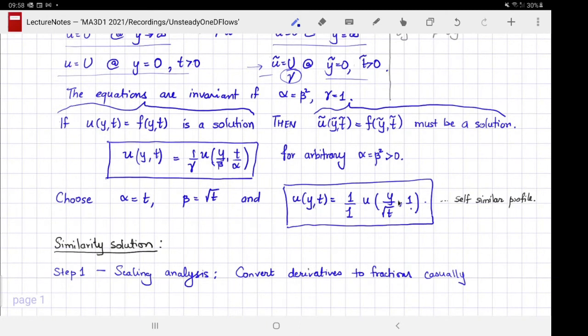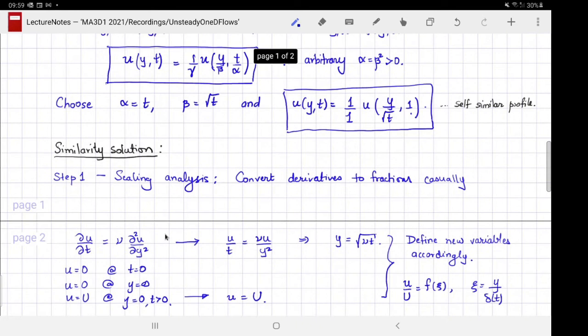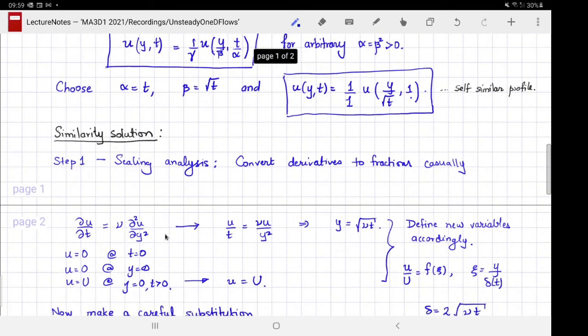This relation indicates that the velocity profile that develops is something we call a self-similar profile because it can be related to the profiles at other times. Therefore, this technique for developing the solution is called a similarity solution technique. To do this, we start with a simple scaling analysis.